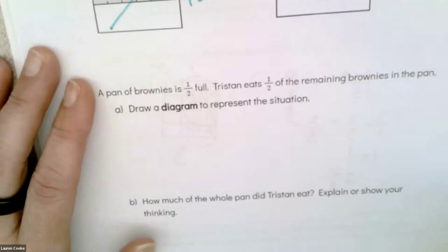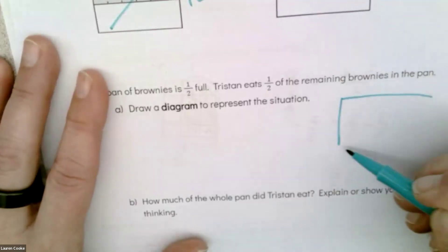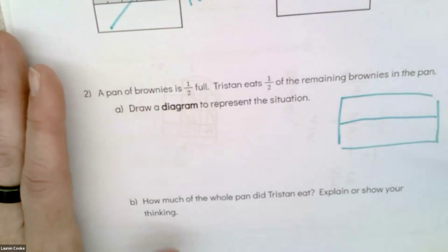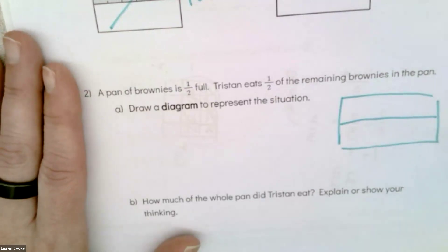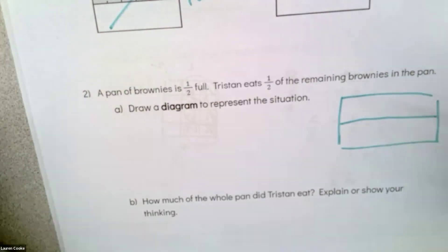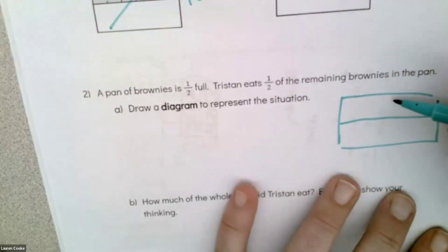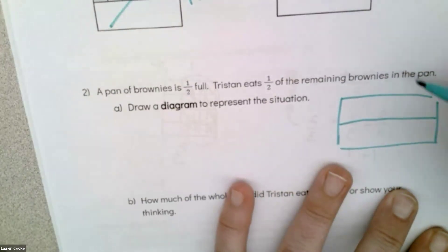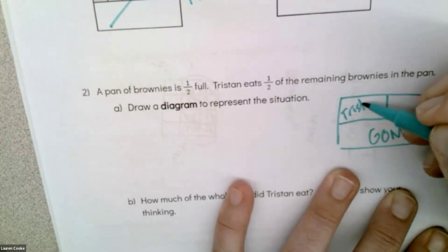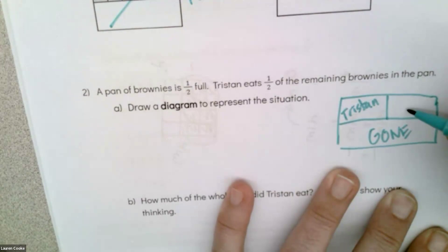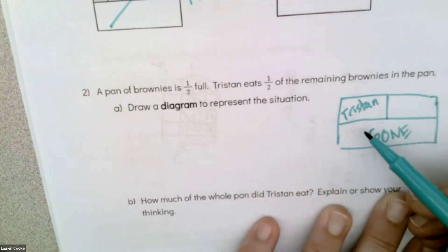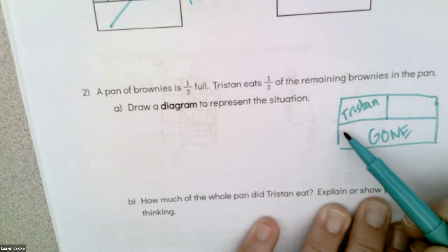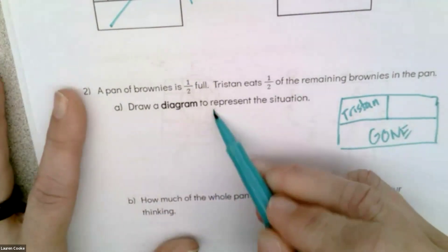For number two, a pan of brownies is 1/2 full. So immediately I'm drawing the pan of brownies, and I'm going to do horizontal and I'm going to get half full. Then Tristan is going to eat half of the remaining brownies. So these are gone, everybody else ate them. And then Tristan is eating this amount, and these are still left over here.